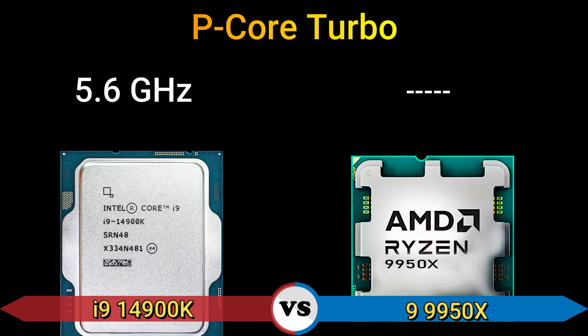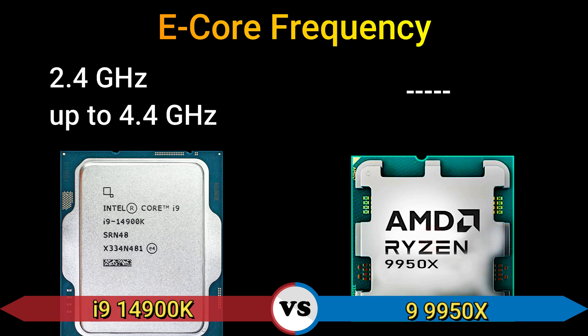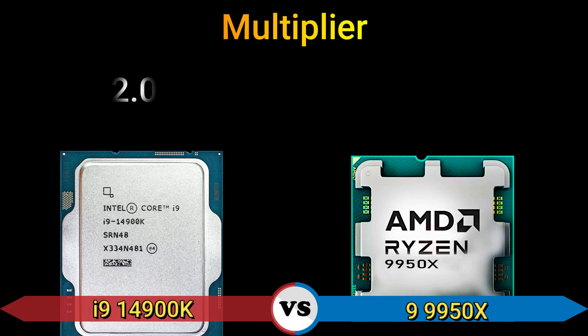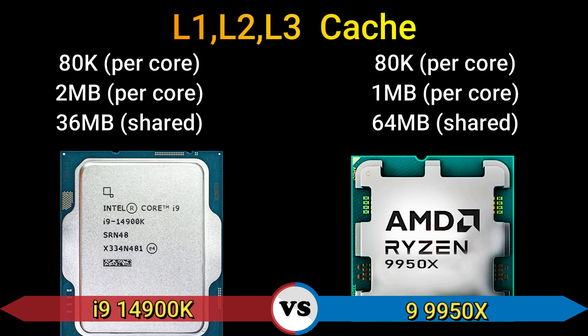Performance core boost: 3.0 and 5.8 GHz. E-core frequency: 2.4 GHz, up to 4.4 GHz. Base clock: 100 MHz. Multiplier: 32.0x and 43.0x. L1/L2/L3 cache: 80 KB per core, 2 MB per core, 36 MB shared, and 80 KB per core, 1 MB per core, 64 MB shared.